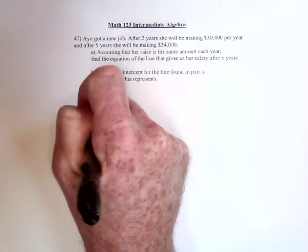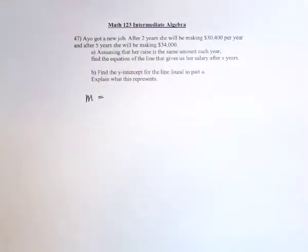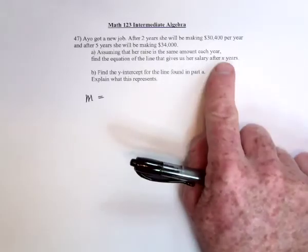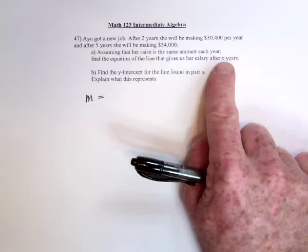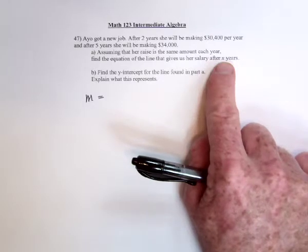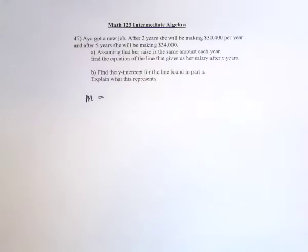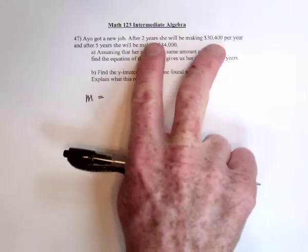So slope, you have to have y2 minus y1. Well what's x and what's y? Well there is a hint right here that you're supposed to use x as years, but if it doesn't say then x should be whatever comes first out of years and money.